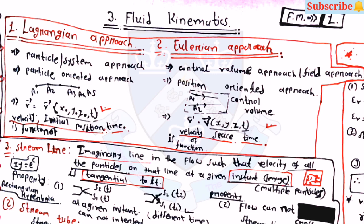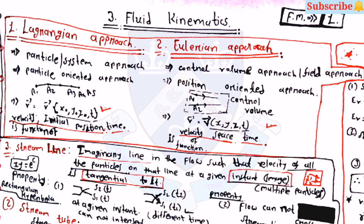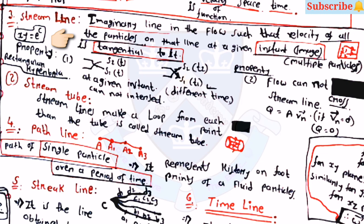The third topic is fluid kinematics. The first approach is the Lagrangian approach, which is a particle or system approach, where v is a function of x, y, z and t based on initial position. Streamlines are imaginary lines in the flow such that the velocity of all particles on that line at a given instant is tangential to it. Streamlines cannot intersect each other at the same time, and flow cannot cross a streamline.